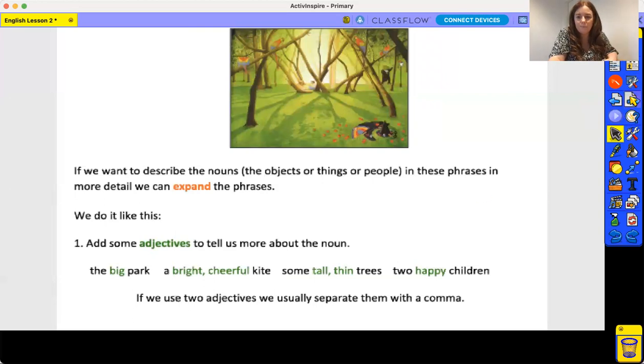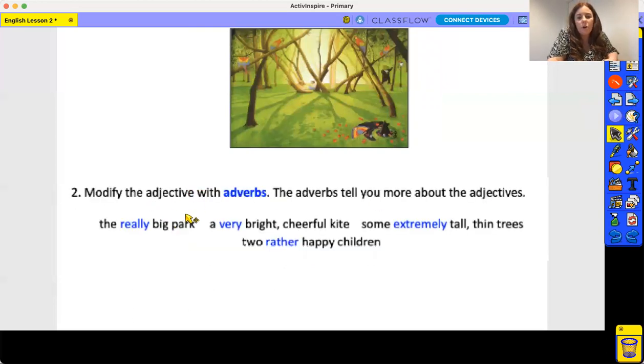So they are a phrase, part of a sentence, where we started off with the noun and then we've described it. So we're going to have a little look now at using adverbs. The adverb tells you something more about the adjectives. So the really big park—it emphasizes that. A very bright, cheerful kite. Some extremely tall, thin trees. Two rather happy children. So again, not a sentence, still a phrase, but we're adding more detail to it.